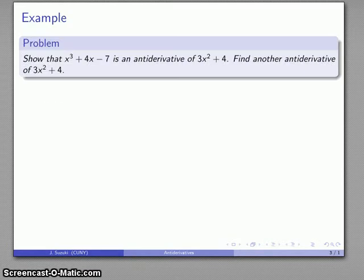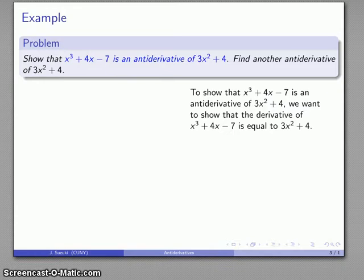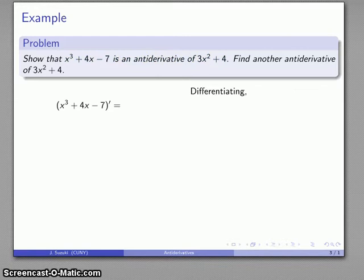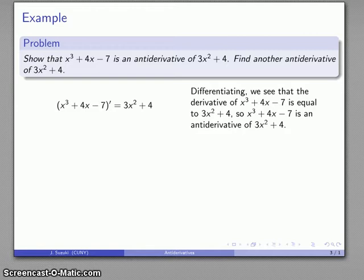Let's take a few examples. Take the function x³ + 4x − 7, and we want to show that this is an antiderivative of some function. If this is an antiderivative, that means the derivative of x³ + 4x − 7 should be 3x² + 4. We can verify that: the derivative of x³ + 4x − 7 is, in fact, 3x² + 4. So x³ + 4x − 7 is an antiderivative of 3x² + 4.